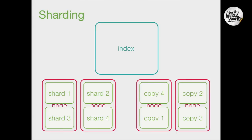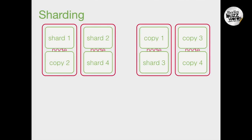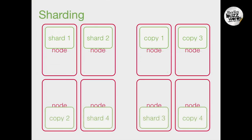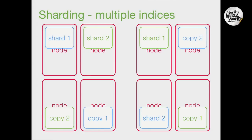When you add more resources, Elasticsearch will take your data and balance it around. Here we started with four nodes, then added another four nodes, and Elasticsearch figures out how it should be evenly distributed and copies the data to its new home. It doesn't matter which index the shards belong to — multiple indices in a cluster will have their shards spread out and balanced in exactly the same way.